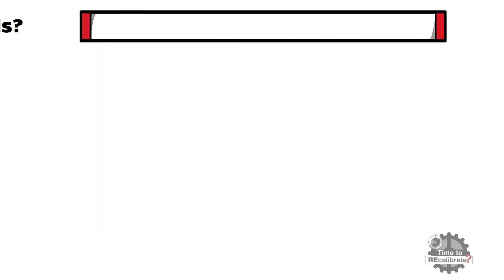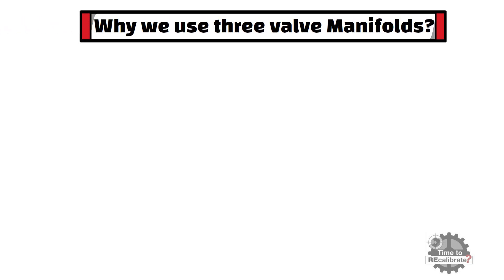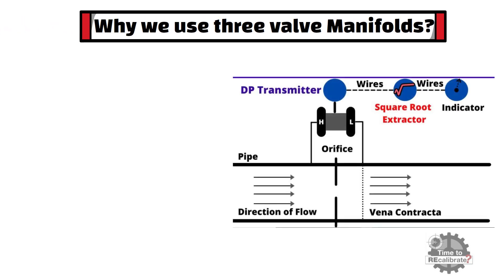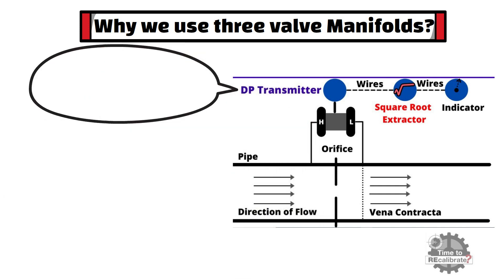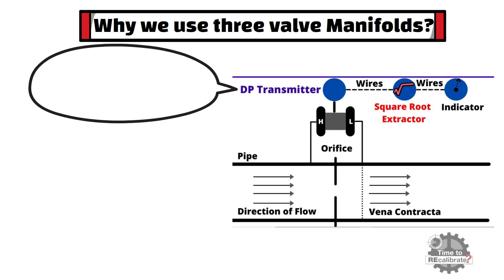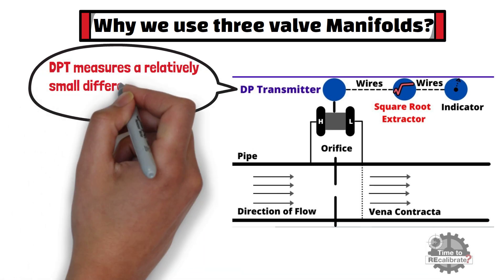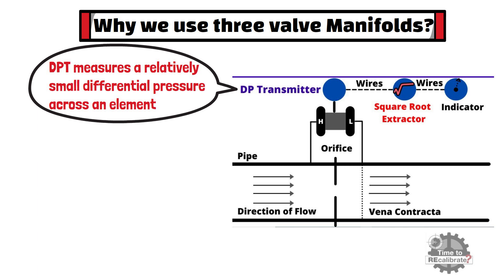First of all, let's learn what will happen to differential pressure transmitter if we do not use three valve manifolds. One of the problems with the use of differential pressure transmitter with respect to the measurement of flow is that the transmitter measures a relatively small differential pressure across an element such as an orifice.